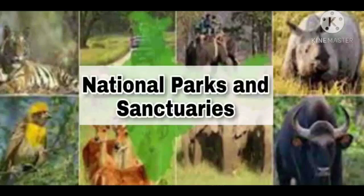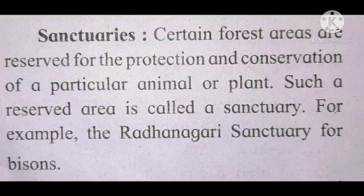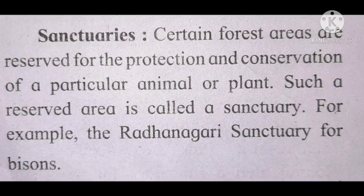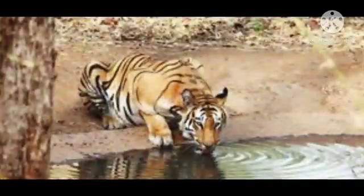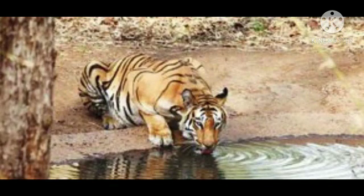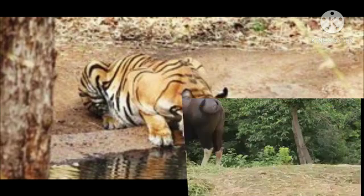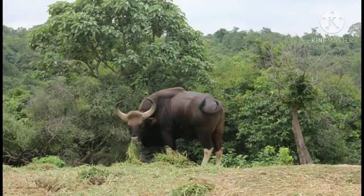Next come sanctuaries. Certain forest areas are reserved for the protection and conservation of animals, and such a reserved area is called a sanctuary. For example, the Radha Nagari sanctuary for bisons. In these big sanctuaries, large animals such as zebras, tigers, lions, elephants, and yaks have been protected. These all types of animals can be seen in sanctuaries, which are reserved areas.